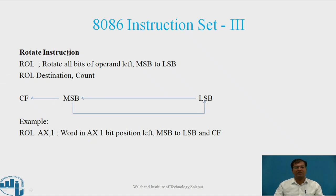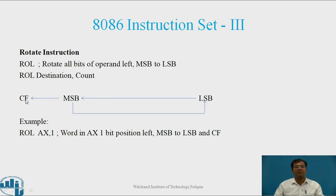Next is the rotate type of instruction. The first one is ROL — rotate all bits of the operand left, with MSB copied to LSB. The syntax is: ROL destination, count. Bits rotate left continuously; the MSB content is copied to LSB and the same content is also copied to the carry flag. Example: ROL AX, 1 — rotates the word in AX one bit position left, MSB to LSB and CF.